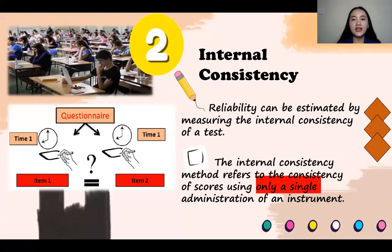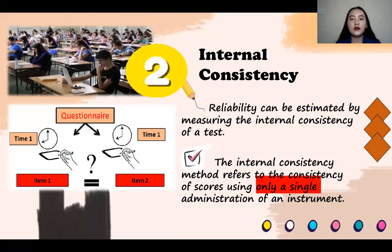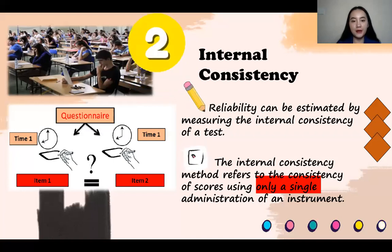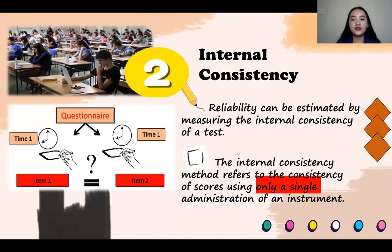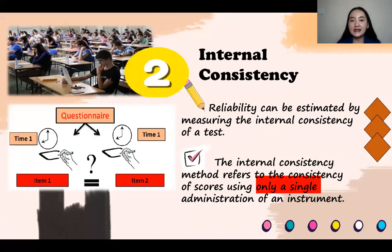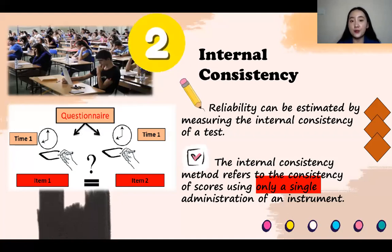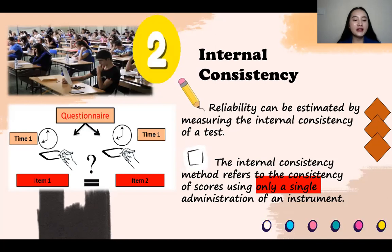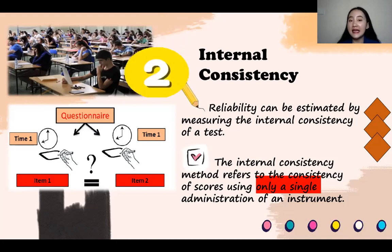Now let's proceed to internal consistency. Reliability can be estimated by measuring the internal consistency of the test. And the internal consistency method refers to the consistency of scores using only a single administration of an instrument. And internal consistency is a way to gauge how well a test is actually measuring what you want it to measure. And internal consistency is considered as an index of the reliability of a test.